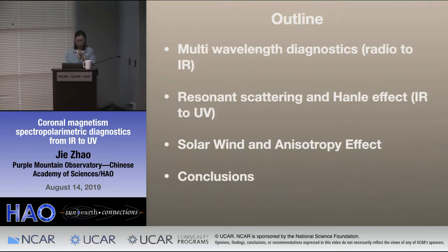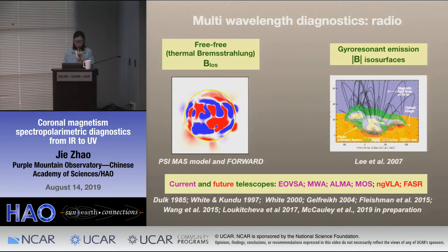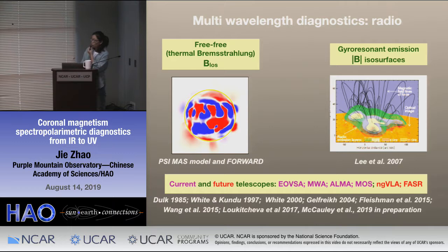We can measure the coronal magnetic field through radio wavelengths. There are two mechanisms. The first one is free-free emission, which is produced by thermal bremsstrahlung — it can give us the line-of-sight magnetic field. This image, the left image, shows the forward modeling result from the PSI-MHD model, and the red and blue show the positive and negative line-of-sight magnetic field. The other mechanism is from gyro-resonant emission.